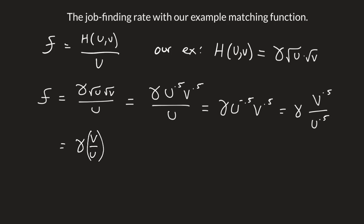To make this look better, we can write this as gamma times the square root of v over u.